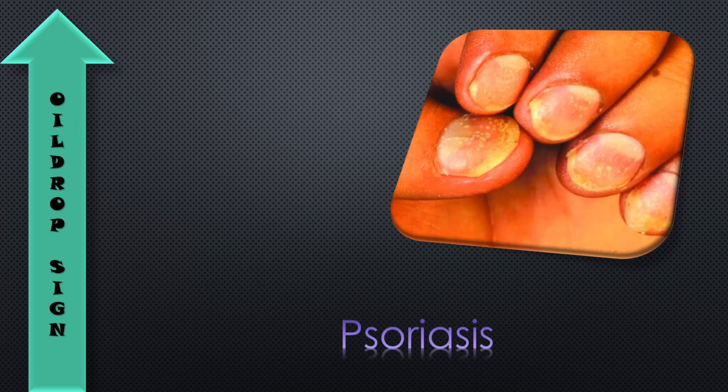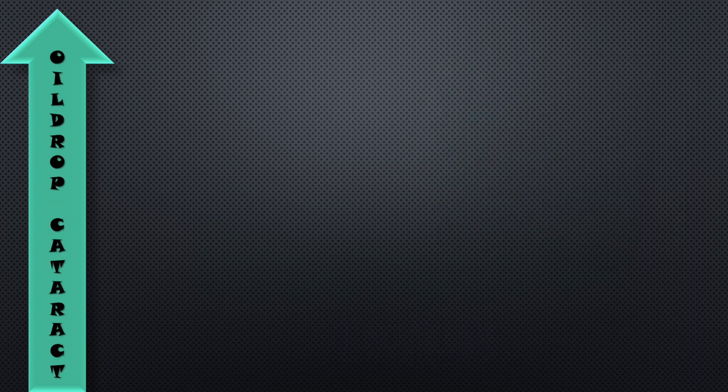The next one is the oil drop sign. Oil drop sign is seen in psoriasis. We can see in this picture that psoriasis affects the nails — psoriasis causes yellowish-orange colored spots called salmon patch dyschromia in the nails. That is the oil drop sign.